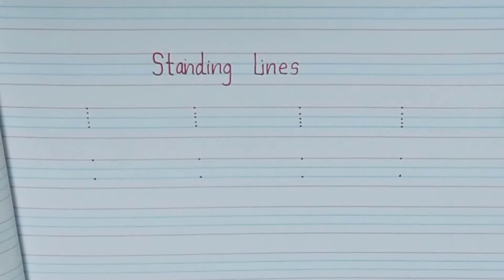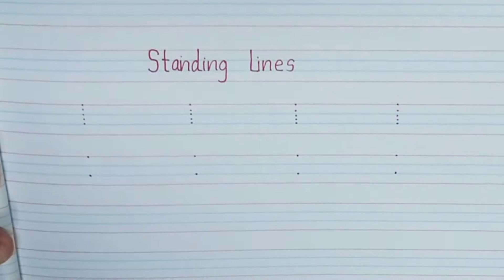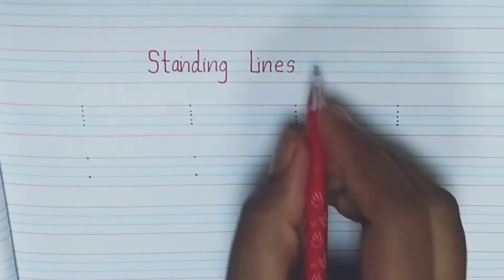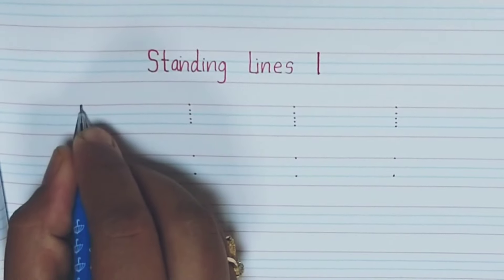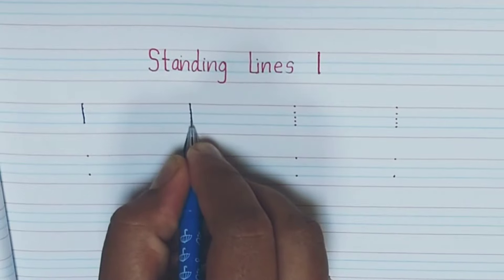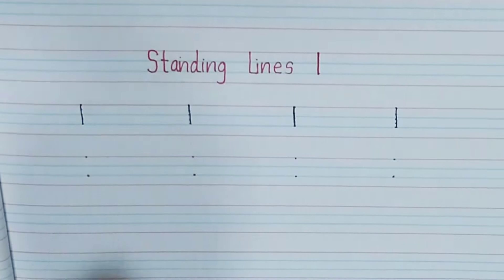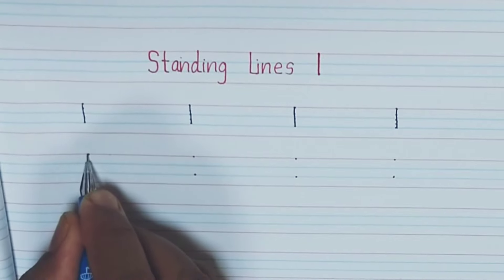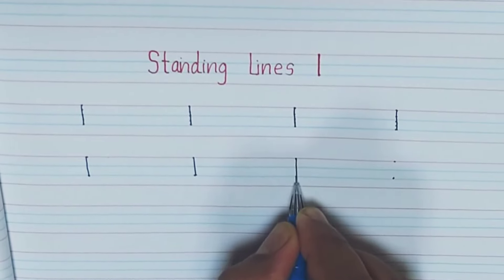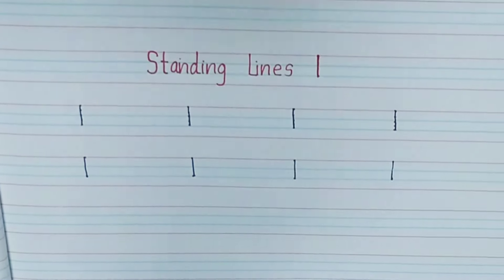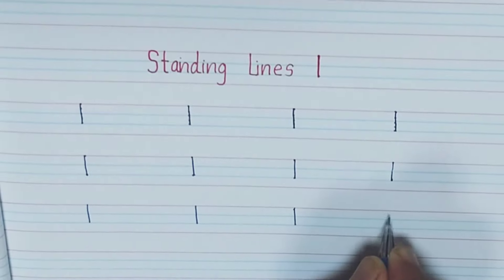Next, we practice in the four-line book. First one, standing lines. How to draw standing lines? A straight line from up to down — it is a vertical line. We use only three lines here, red to blue line. First, trace the dot from red line to blue line. Then put two dots and practice joining them — first dot to second dot, a straight line up to down. After you practice, you can draw a standing line easily without any dots.